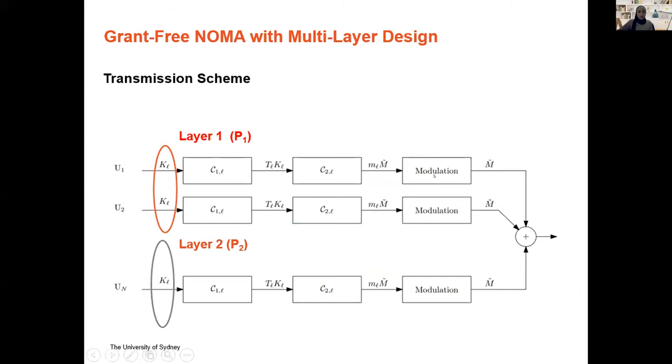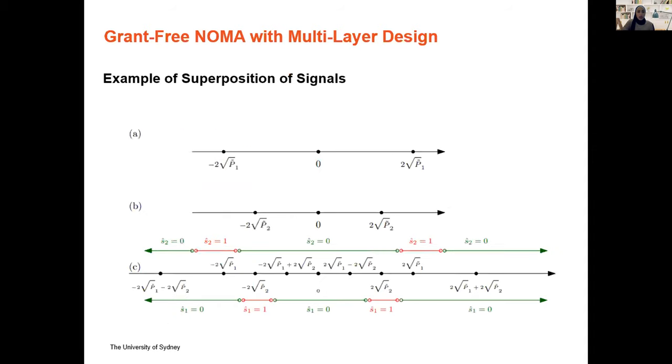So this brings me to the system model. We first introduced a multi-layer design, a combined design between power and code. Based on the random coding bounds, we have a layer where all the users have the same power and all the users use the same code. The code is made up of two concatenated codes. One is for just error correction, as traditional. And one is to ensure that many-to-one mapping, that unique mapping, that if we have the superposition of a certain number of code words that are unique, we can actually recover everything just from the sum. We repeat that over multiple layers. Each layer has its own power. We can detect the power and then we can know the layer and then we go forward with the decoding.